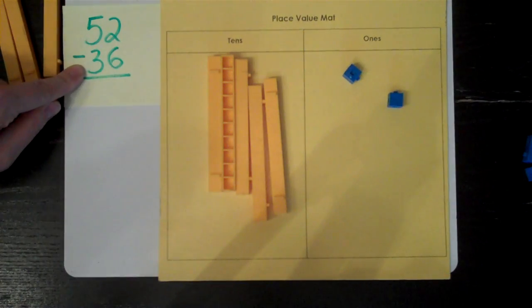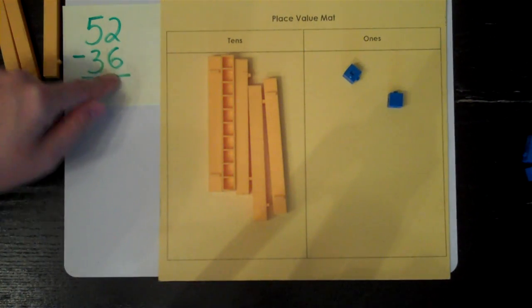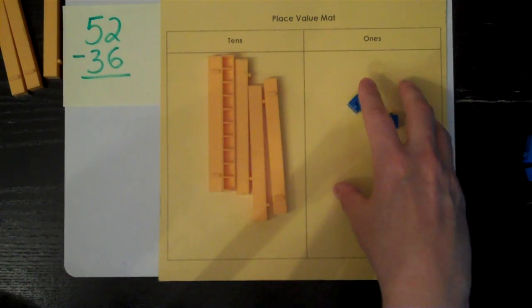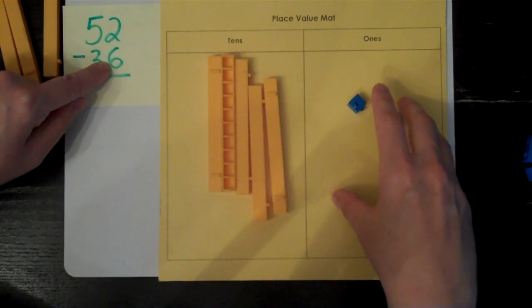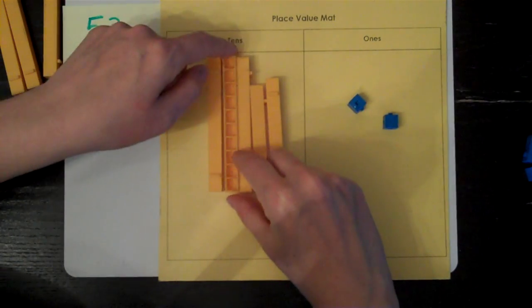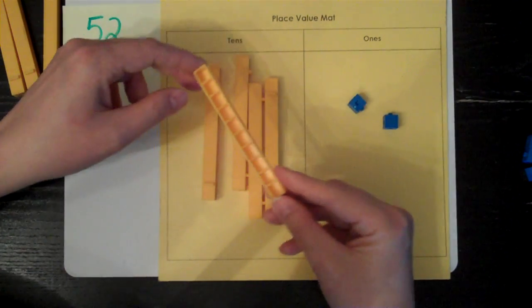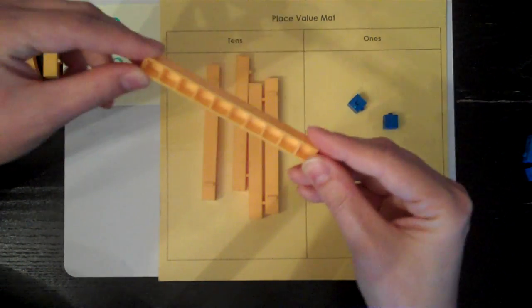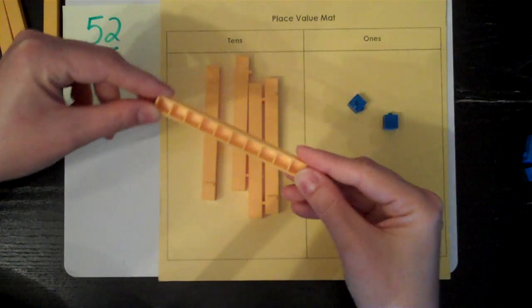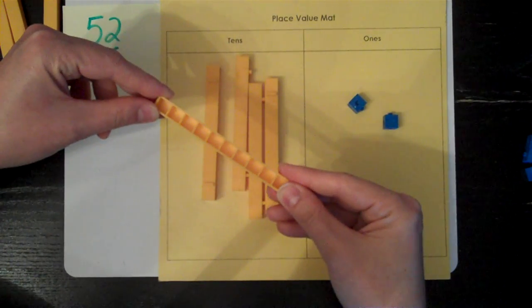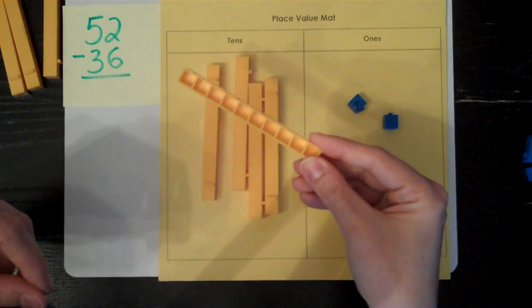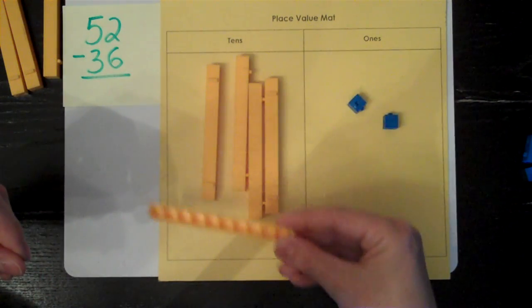Now I'm going to take away thirty-six. I'm going to start in the ones place. One, two. I don't have enough ones here to take away six. But, if you remember, all of these ten rods are actually made up of ones stuck together. So I can trade one ten for ten ones. You say it. Trade one ten for ten ones. And that's what I'm going to do.